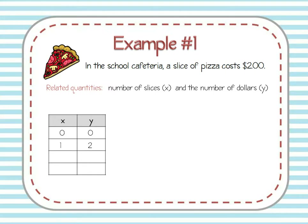When X is zero, Y is also zero — zero slices, zero dollars. If I buy one slice, I will owe two dollars, so when X is one, Y is two. If I buy two slices of pizza I'll pay four dollars, and three slices is six dollars. We can go on and on, but instead let's write this as an equation: the amount of money I owe, Y, equals the number of slices times two — so Y = 2X.